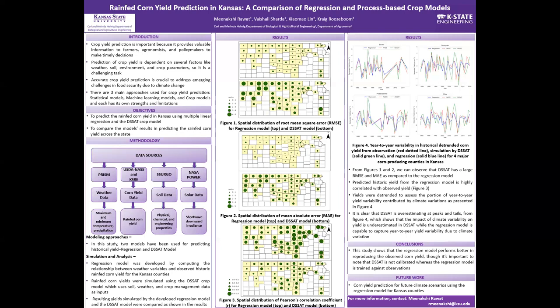The methodology for this study includes data download. Maximum and minimum temperature and precipitation as weather variables were downloaded from PRISM, rain-fed corn yield from USDA NASS and KSRE, physical, chemical, and engineering properties of soil from SSURGO, and shortwave downward irradiance from NASA Power. Two models have been used for predicting historic corn yield: regression and DSSAT.